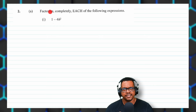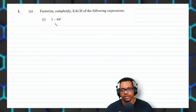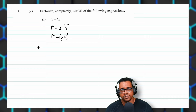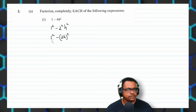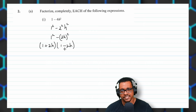Moving on to question two: factorize completely each of the following expressions. We have 1 minus 4H squared. There's nothing common between the two terms. But I recognize that 1 is 1 squared and 4 is 2 squared. So this is 1 squared minus (2H) squared — the difference of two squares. Using the difference of two squares formula: one bracket is plus, one is negative. So the answer is (1 + 2H)(1 − 2H).